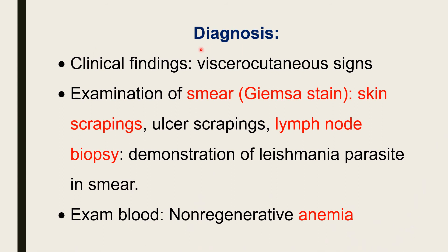Diagnosis is easy, not very hard. From the clinical findings — viscerocutaneous signs, involvement of various organ systems and the skin — the important thing for diagnosis and confirmation is examination of a smear. It is prepared from either skin scraping, ulcer scraping, or lymph node biopsy, stained with Giemsa stain. Demonstration of Leishmania parasite in the smear is confirmatory diagnosis. These things are very easily available: skin scraping, ulcer scraping, lymph node biopsy.